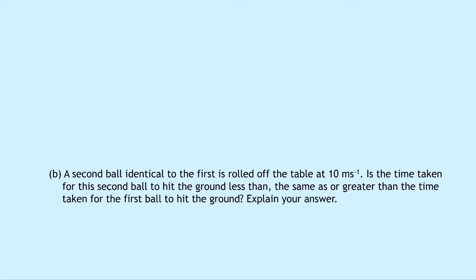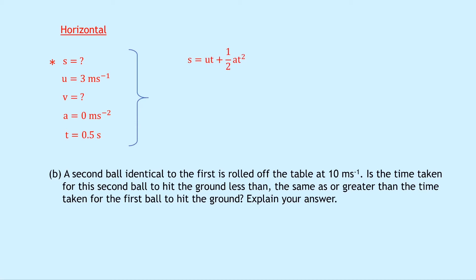Now that we've found the time, we need to use it to find the horizontal range. For the horizontal motion using SUVAT: s is unknown, u is 3 meters per second, v is unknown, acceleration a is 0 meters per second squared because the ball isn't accelerating horizontally, and time t is 0.5 seconds. Using s equals ut plus a half at squared, substituting gives 3 times 0.5 plus a half times 0 times 0.5 squared. The second term disappears, reducing to s equals ut, giving an answer of 1.5 meters.